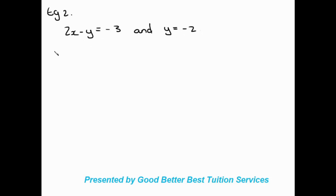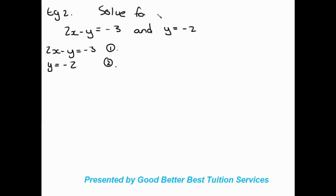We write out 2X minus Y equals negative 3 as equation number 1, and Y equals negative 2 as equation number 2. Now we look at what was given to us — we're told to solve for X and Y. We're already given that Y equals negative 2, so we still need to solve for X.